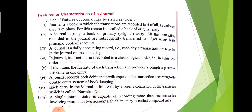The journal maintains the identity of each transaction and provides a complete picture of the entry. A journal records both debit as well as credit aspects. Each entry in the journal is followed by a brief explanation of the transaction, and that brief explanation is called narration. A single journal entry is capable of recording more than one transaction involving more than two accounts — that is called compound entry.